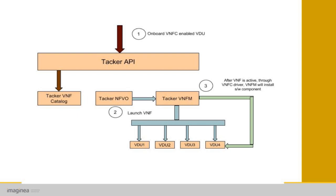This is the workflow. First, we write a VNF descriptor with VNFC enabled. The first step is onboarding the VNF descriptor into the Tacker API. The next step is launching the VNF from the onboarded VNFD. Once all VDUs in the VNF are active, Tacker or another component will install the VNFC inside the VDUs using the specified protocol.